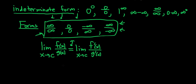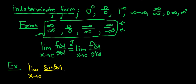Let's do some examples. L'Hopital's Rule is notoriously misused — it's one of those rules that people tend to overuse because it's so powerful. Here's a simple example: the limit as x approaches 0 of sin(2x) over 3x. This is a limit from Calculus 1. Using L'Hopital's Rule is a little easier. If you just plug in 0, you get sin(0) over 0, which is 0 over 0 — so we have the indeterminate form, and we can use L'Hopital's Rule.